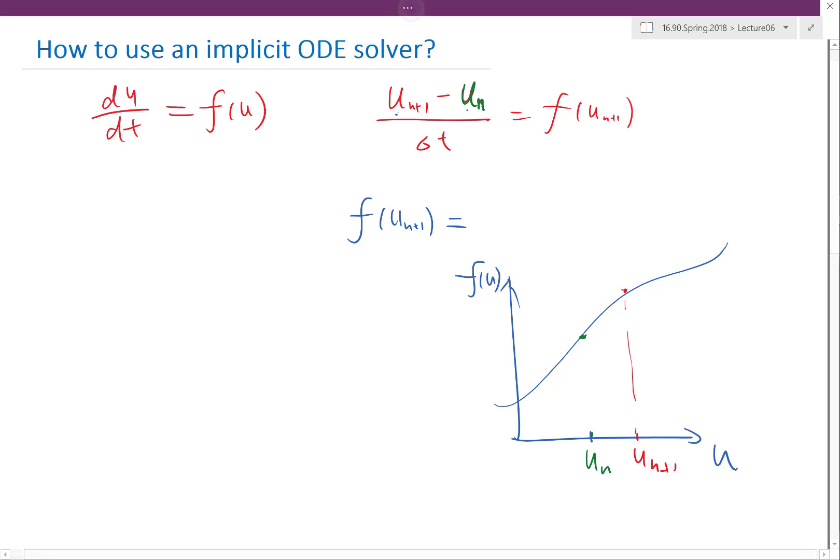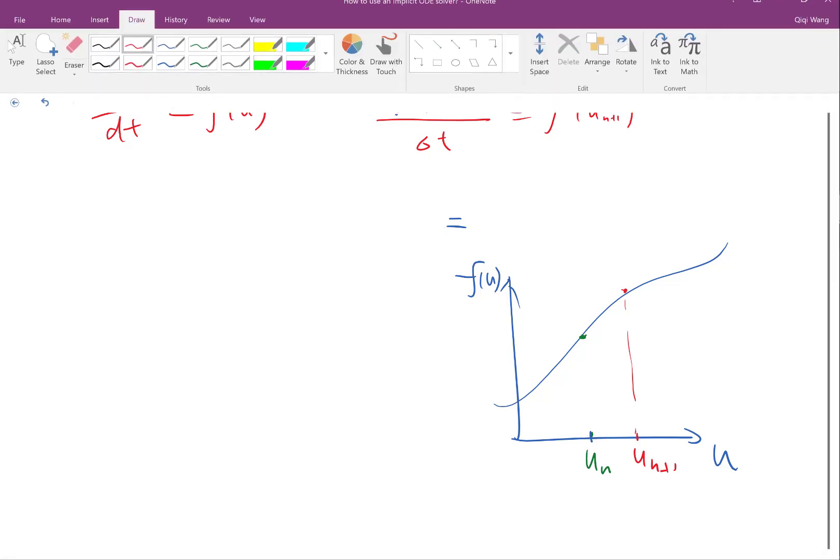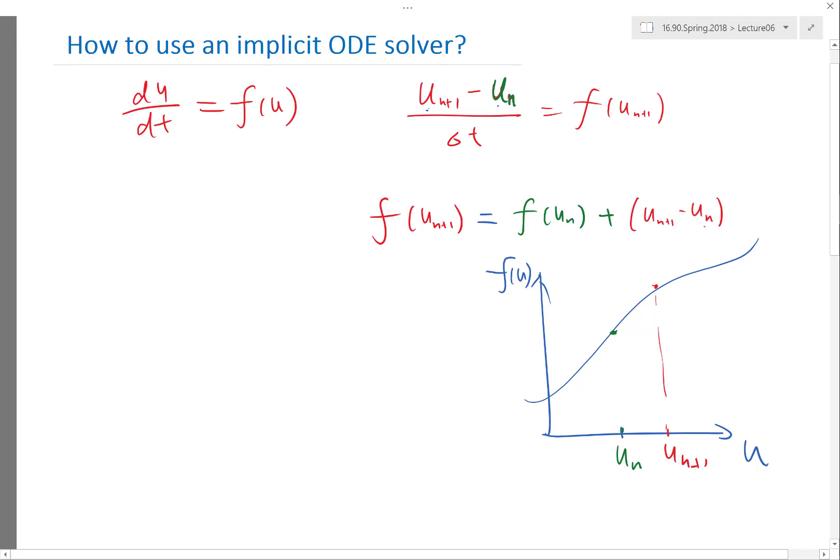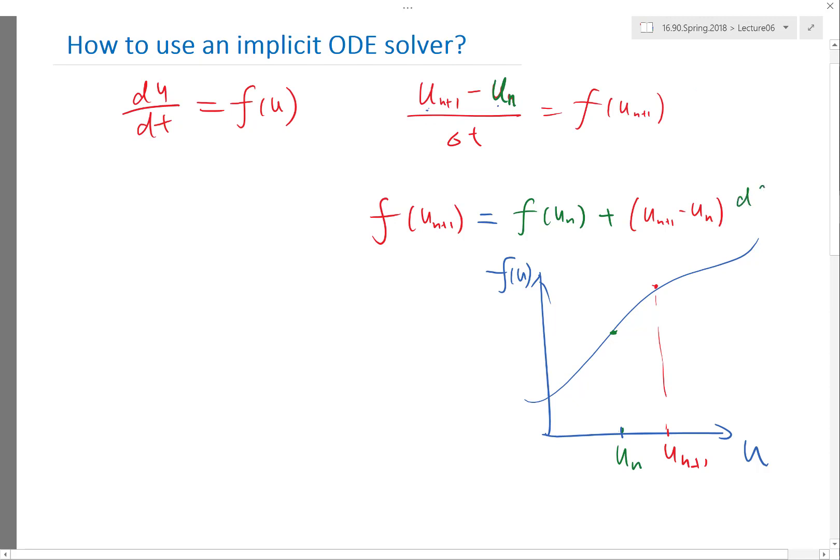So, the best thing to do is I want to expand f(u_n+1), which let me actually write it as a red thing, right, because this is not something we know. f(u_n+1) is equal to, first of all, f(u_n). That's something we know, right? Plus, something we don't know, which is u_n+1 minus u_n, right? Times what? Times df/du, which is at where? At u_n, which is something we know, right? So, of course, this is not exactly equal. It's approximate. But if the time step is small and the u_n+1 minus u_n is small, then this is pretty good.